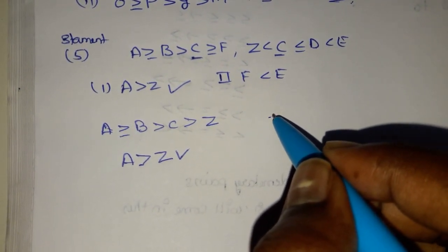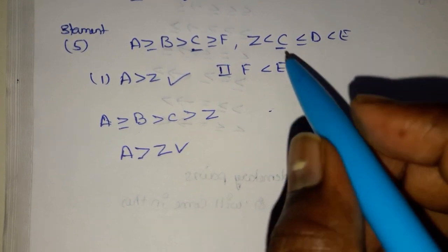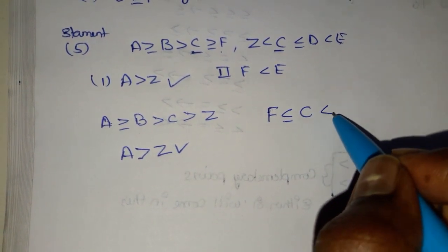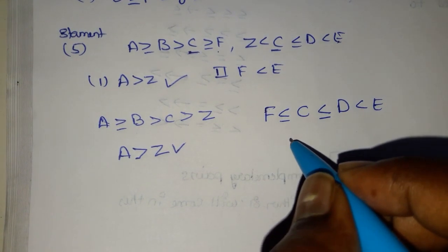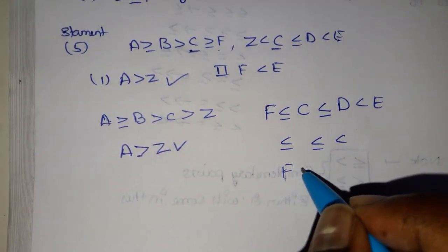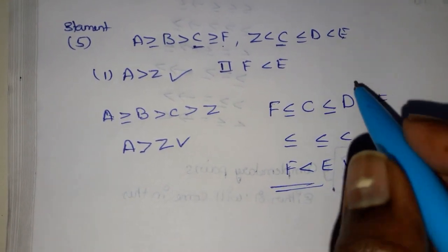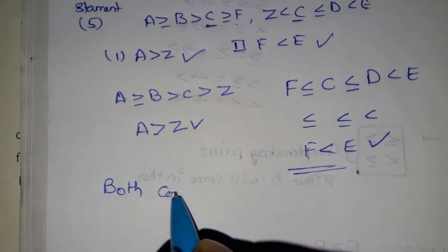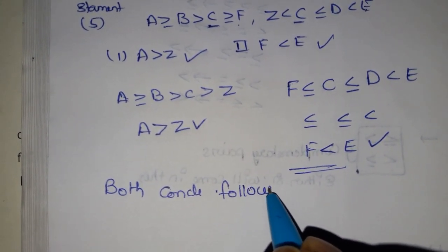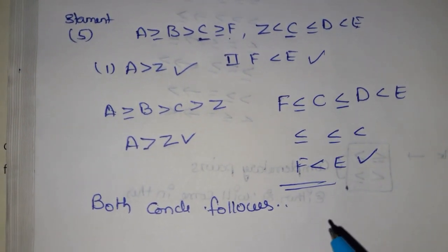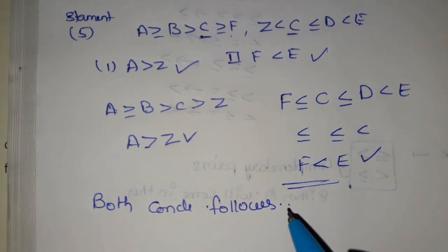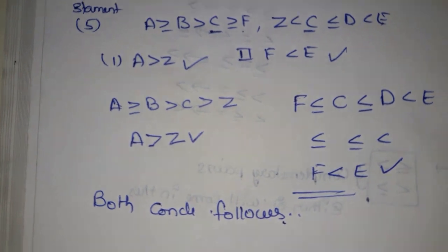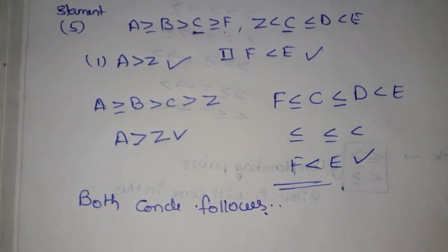Second conclusion: F to E — the common element is C. F less than or equal to C. Next, C less than or equal to D less than E. Final result: less than or equal to, less than or equal to, less than — gives F less than E. This is correct. Both conclusions follow. Thank you friends, please subscribe my channel. Have a nice day.